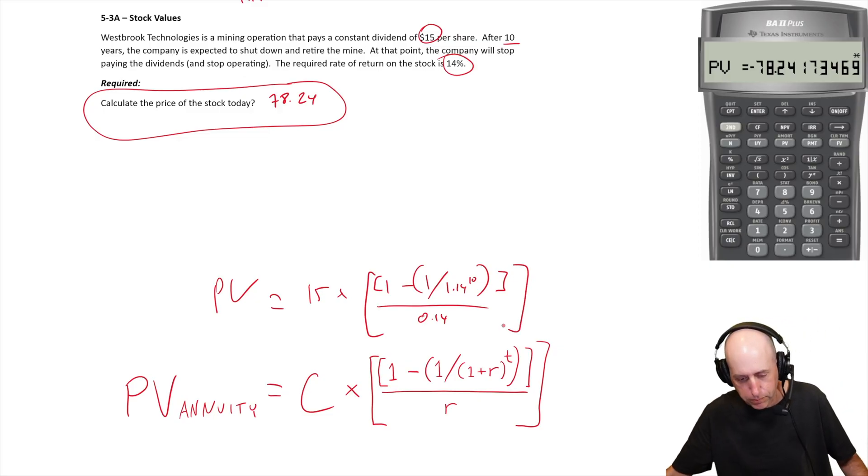Okay, so clear that out. 1.14 to the power of 10 is 3.7. I go 1.14 to the 10th, divide by one, one by that, so one over x is 0.269. One minus that answer, so minus, hit the plus minus, 0.73. Divide by 0.14, that's 5.2. Multiply that by 15.